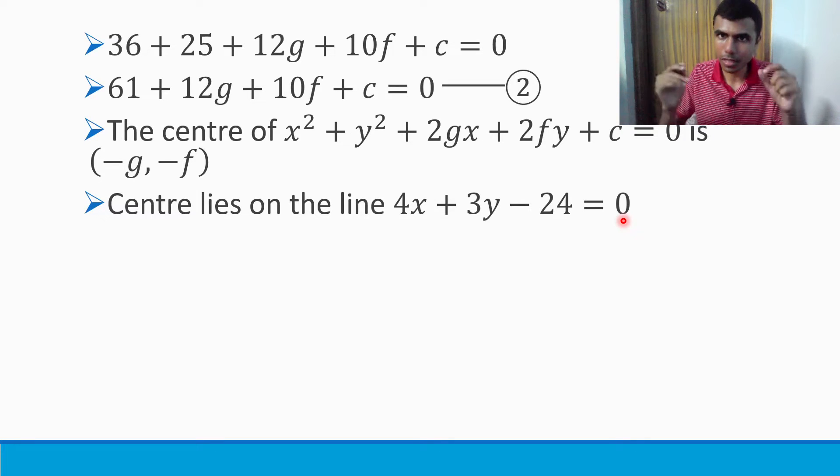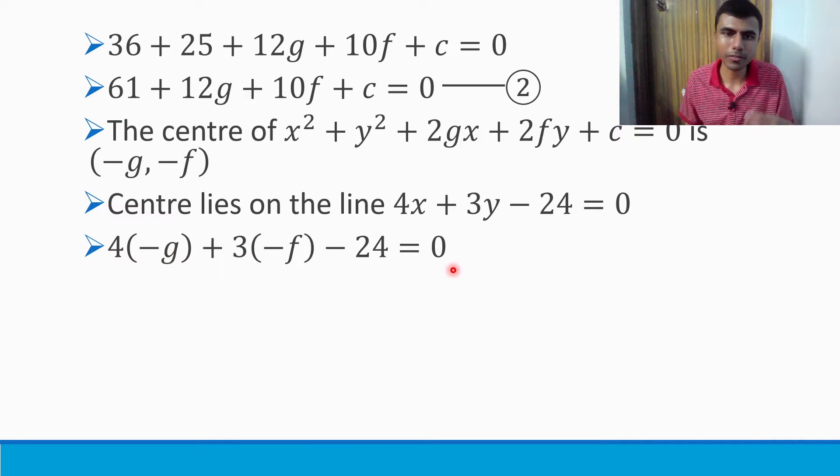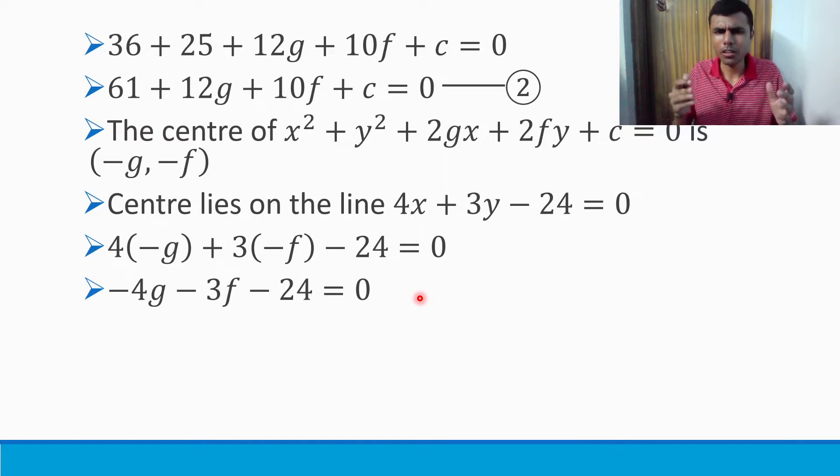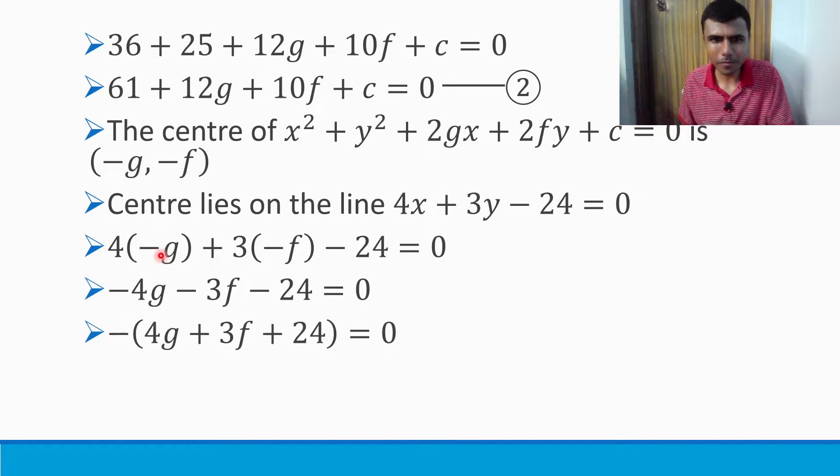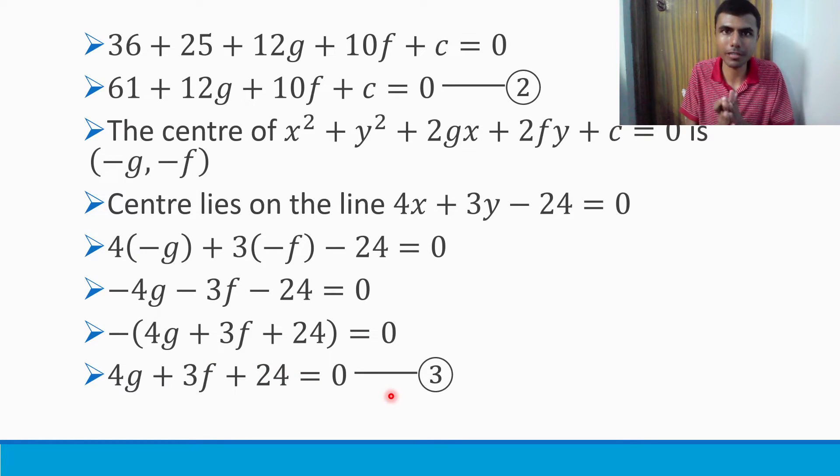So in place of x and y, you can use -g and -f. So 4(-g) + 3(-f) - 24 = 0, which gives -4g - 3f - 24 = 0. Let us remove this negativity. Taking minus common: -(4g + 3f + 24) = 0. Sending the minus to the right side, we get 4g + 3f + 24 = 0. Mark it as equation 3.